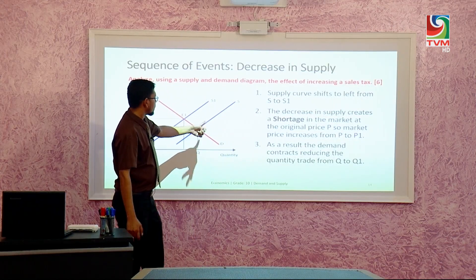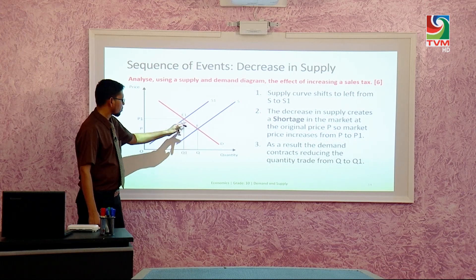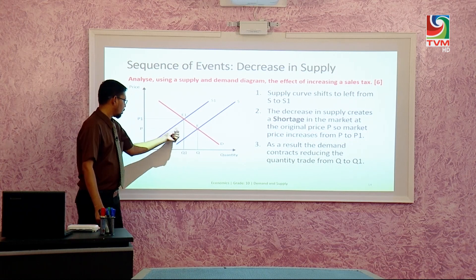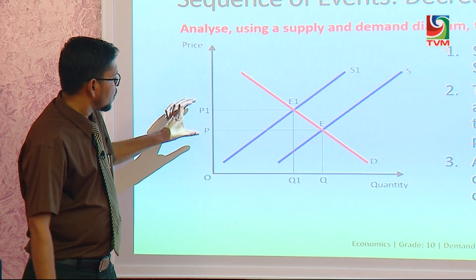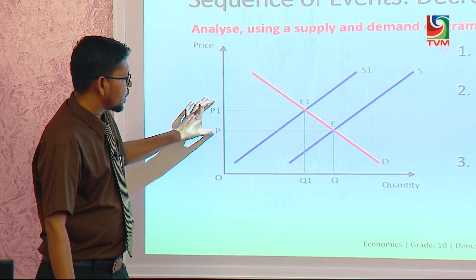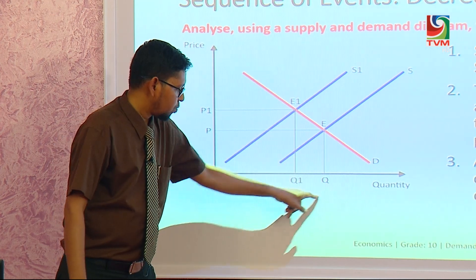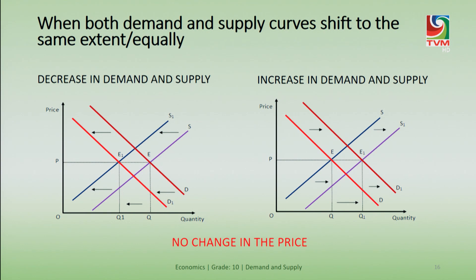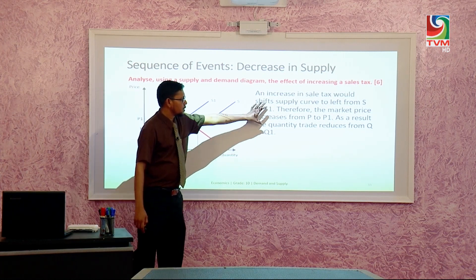The sequence is: first the supply decreases and a shortage occurs. Because of the shortage, the price increases. When the price increases, there is a contraction of demand, which means there is less quantity traded. This is how you write the answer — this is the diagram and this is the answer.